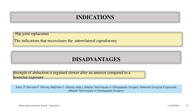Indications: hip joint replacement and the indications that necessitate the anterior lateral capsulotomy. Disadvantages: strength of abduction is regained slower after an anterior compared to a posterior exposure.